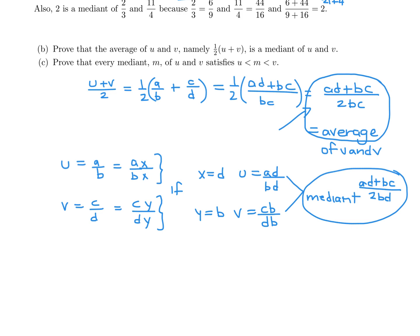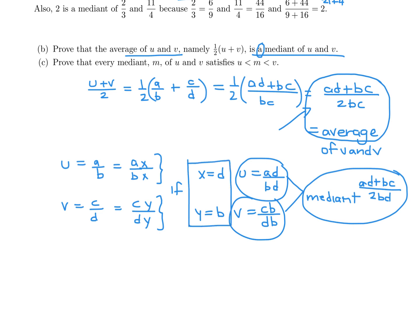That's what they wanted: prove that the average is a median. This is true specifically when U equals AD over BD and V equals CB over DB. There's a very key word here — the average is 'a' median, not the only median. One possible median, and it occurs specifically when we let the scaling factor equal D and the other equal B.